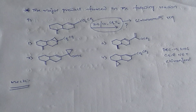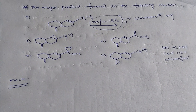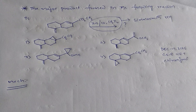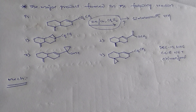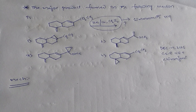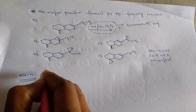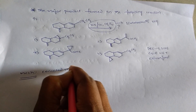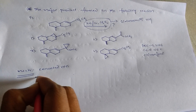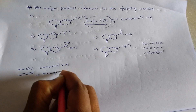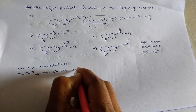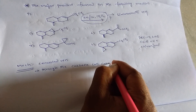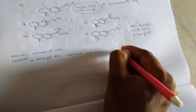The mechanism of the Simmons-Smith reaction is not accurately known, but the majority of sources show that it takes place through a concerted reaction involving carbene or carbenoid involvement.